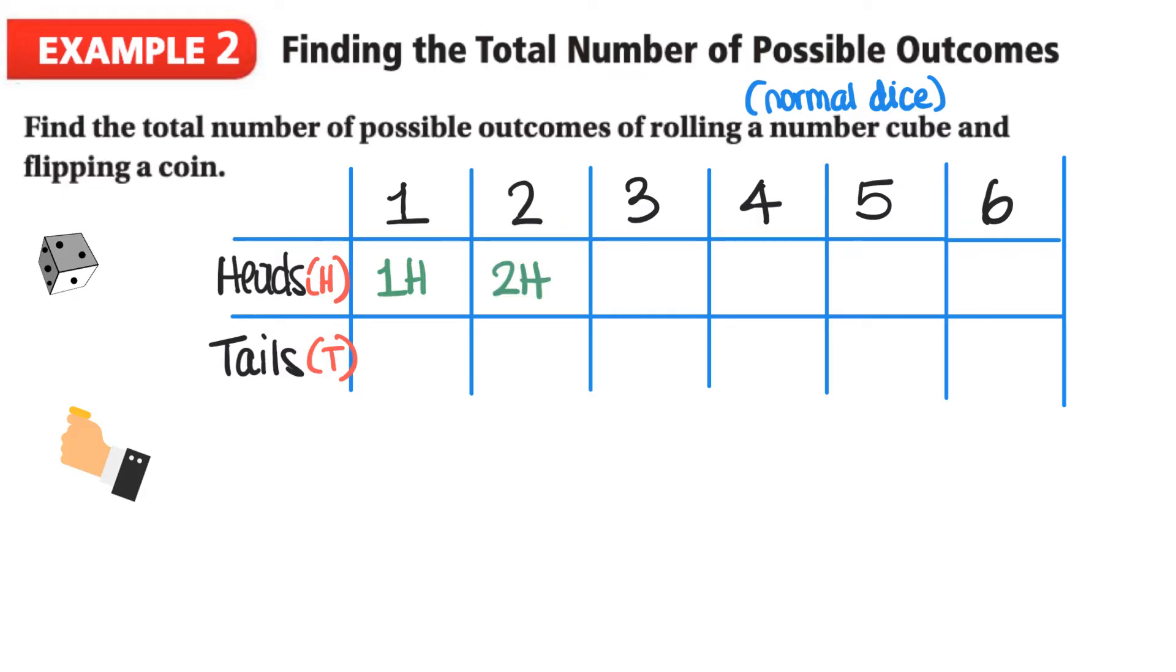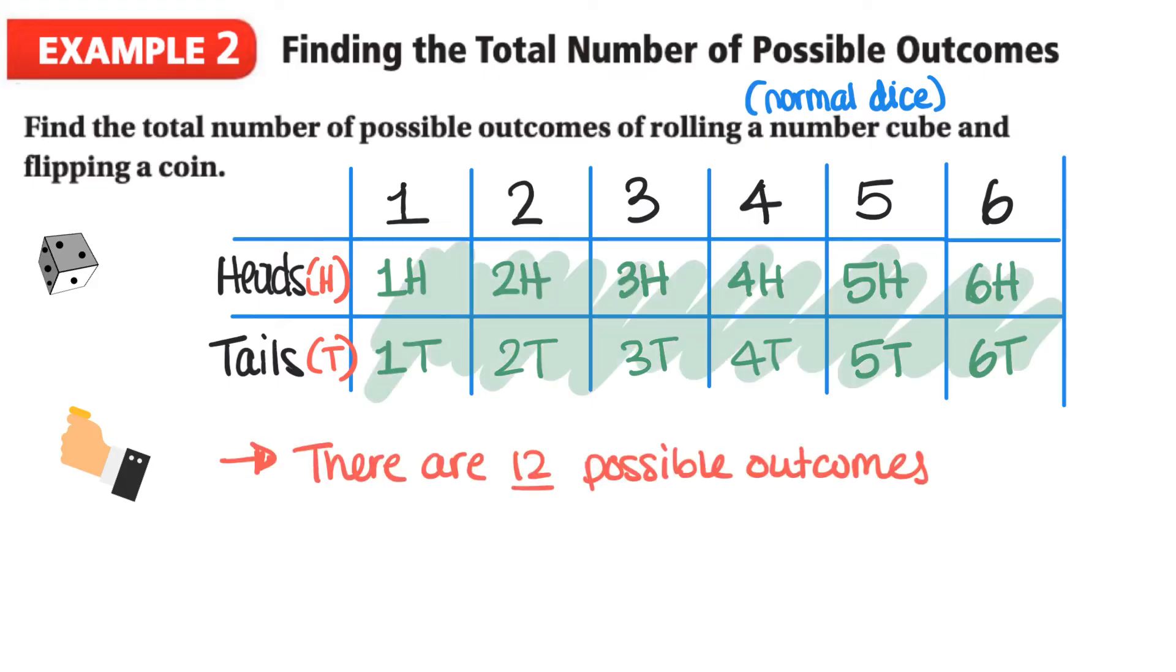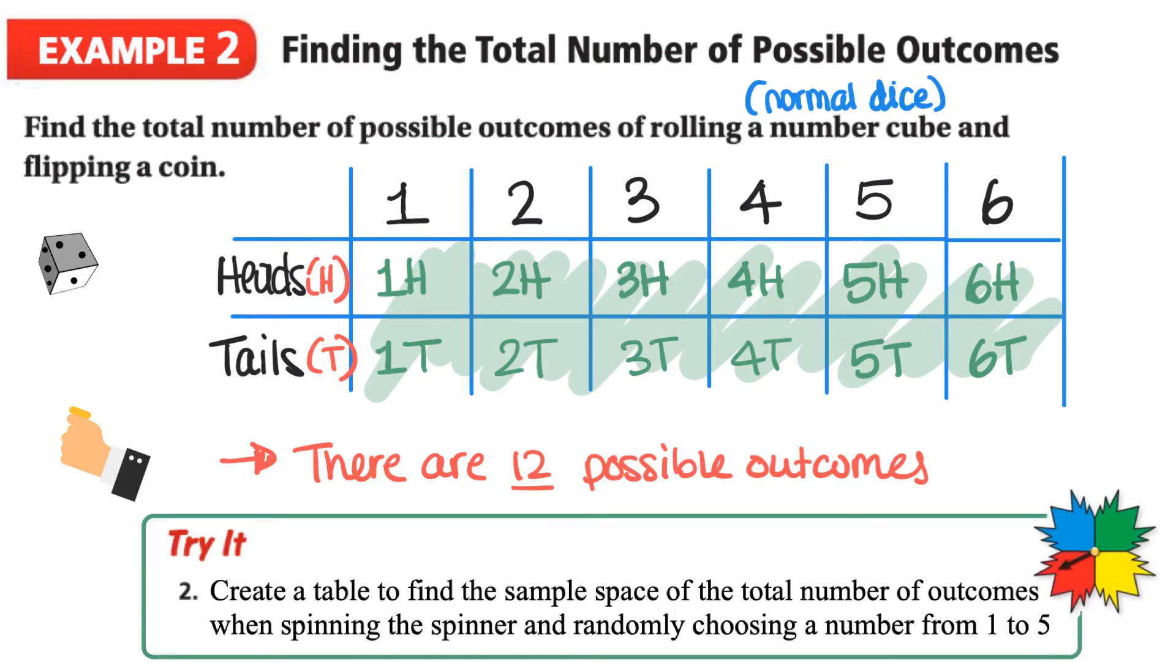So two H, three H, four H, five H, and six H. And then one T, two T, three T, four T, five T, and finally six T. In this table, we can see that there are 12 possible outcomes. All of the outcomes are found inside of the table. Here's our second try question for this video. Create a table to find the sample space of the total number of outcomes when spinning the spinner and randomly choosing a number from one to five.